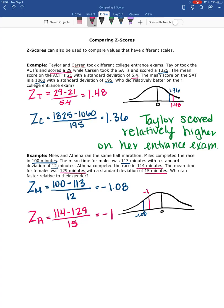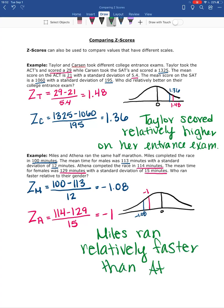So now if we're looking for who ran faster, we're looking for who has the lower relative time. Because if you run faster, that means it takes you less time to complete the race. So because Miles has the lower Z-score, he ran faster relative to his gender. So Miles ran relatively faster than Athena.